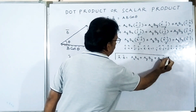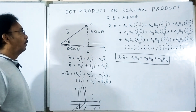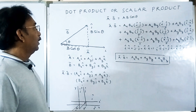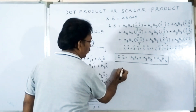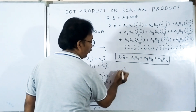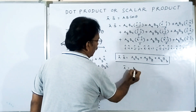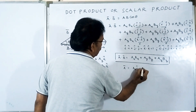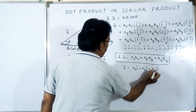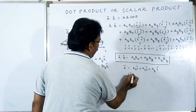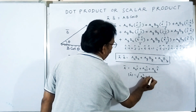What you have to understand is that we are finding the magnitude of the vectors. Taking the same vector A bar equals ax·i cap plus ay·j cap plus az·k cap, the modulus of A equals the square root of ax² plus ay² plus az².